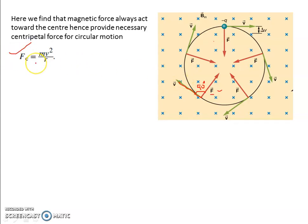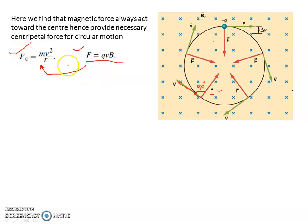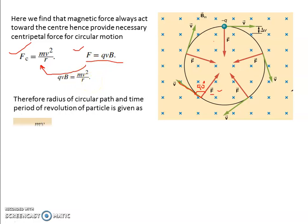Centripetal force Fc = mv²/R. The Lorentz Force is QvB sin theta. Since theta is 90 degrees, Lorentz Force becomes QvB. Since the Lorentz Force provides the centripetal force, both forces are equal: QvB = mv²/R. From this we can calculate the radius of the circular path: R = mv / QB. This is the radius of the circular path described by the charge particle under the Lorentz Force.